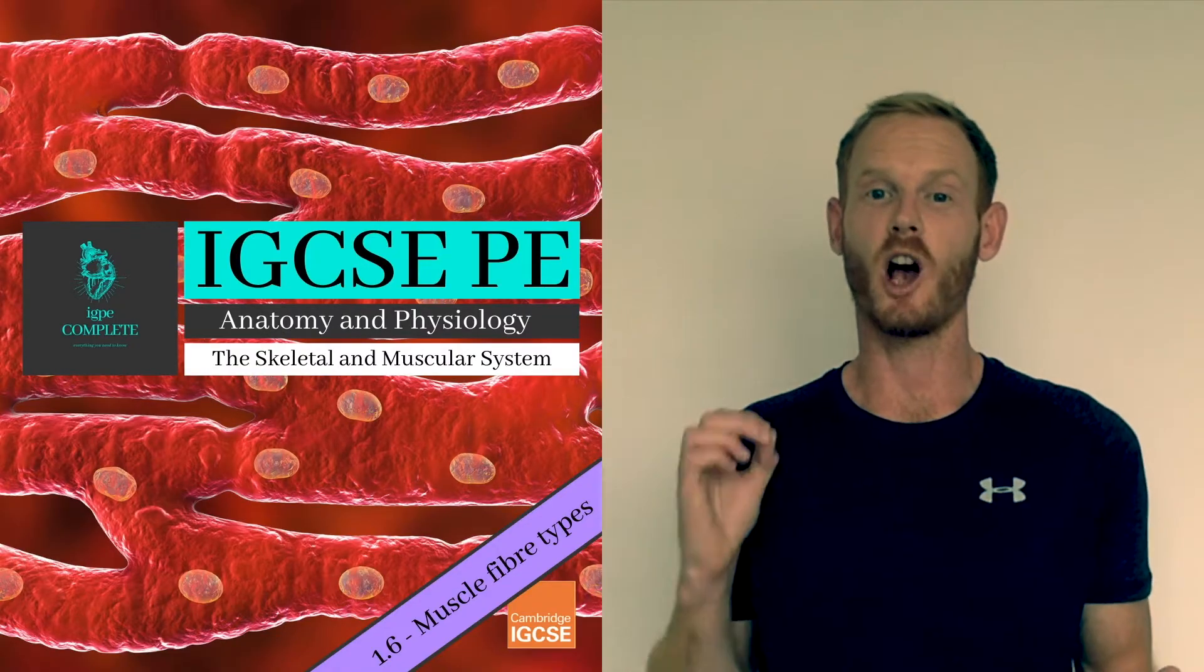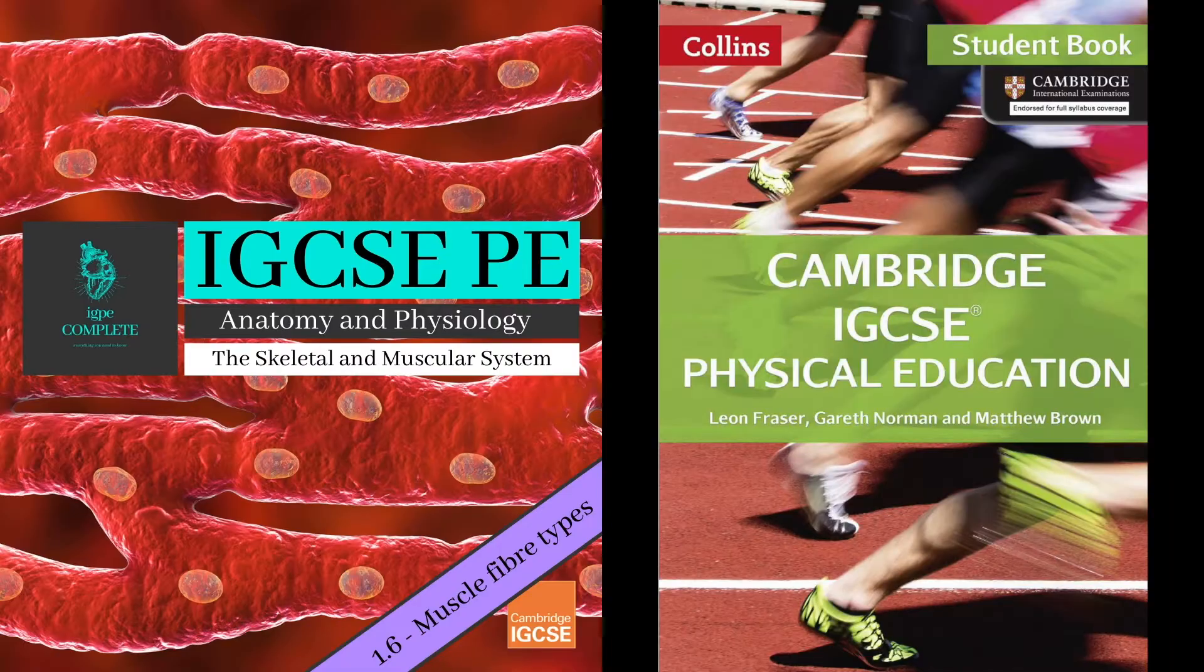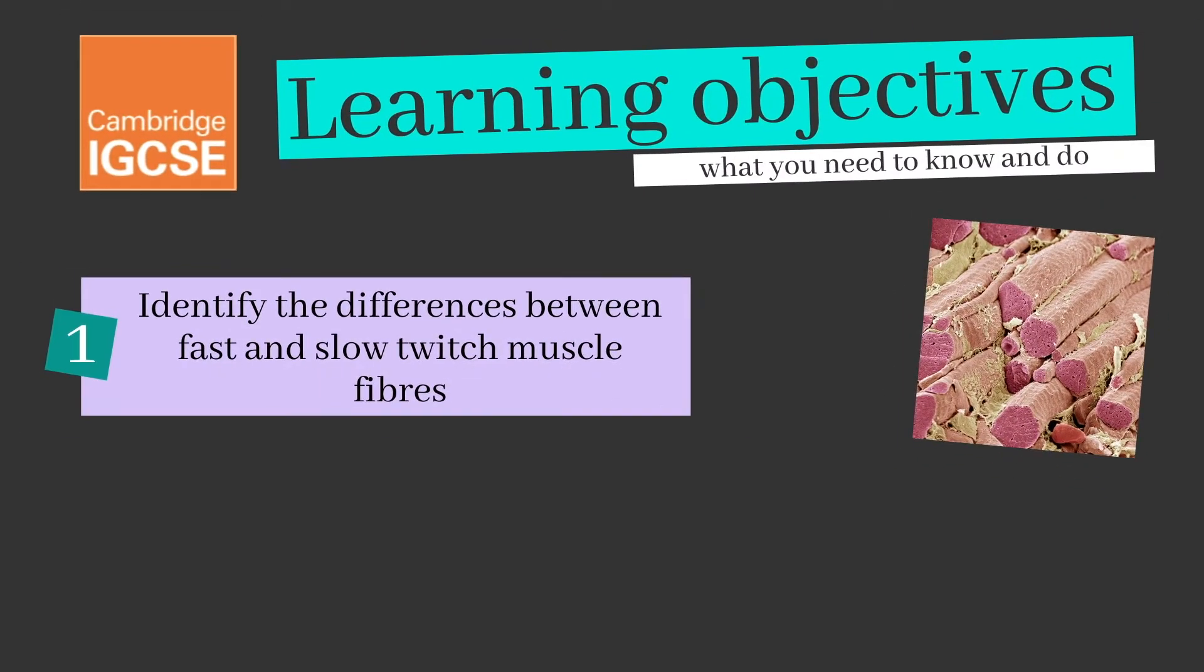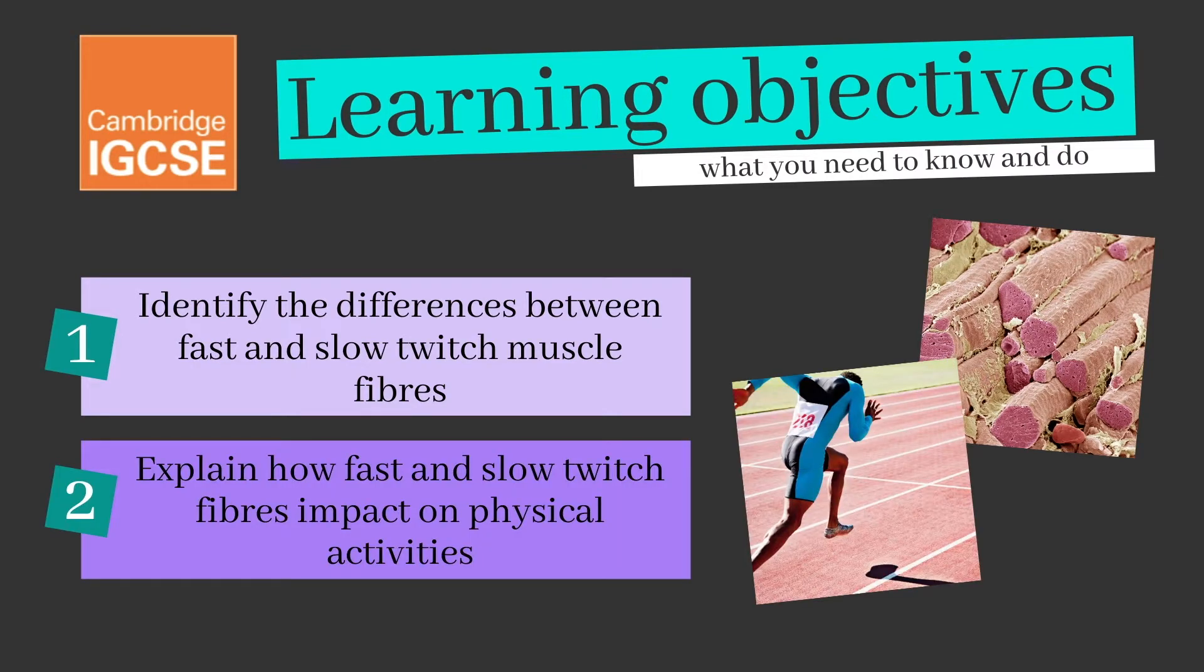As always we'll be focusing only on the learning objectives found in the official Cambridge textbook and we'll cover absolutely everything you need to know for your final exam. Our two learning objectives today are to identify the differences between fast and slow twitch muscle fibers and to explain how fast and slow twitch fibers impact on physical activities.